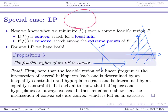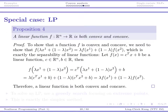The only remaining thing is to show that the intersection of convex sets is convex. Graphically, this is intuitive: given two points in the intersection, the connecting line segment must also lie in the intersection because both sets are convex. We also need to show that a linear function is both convex and concave.